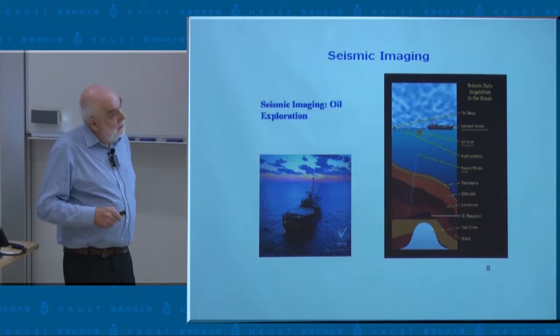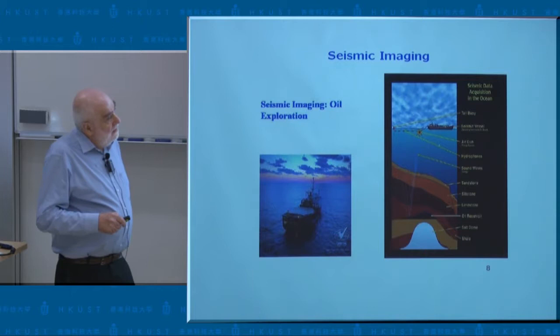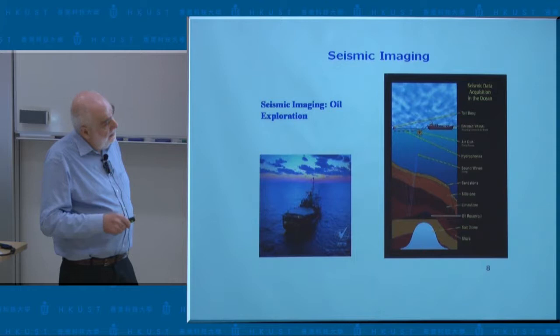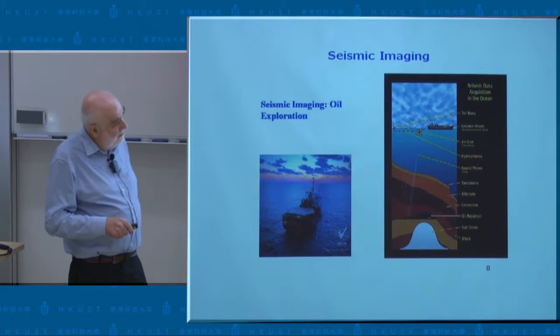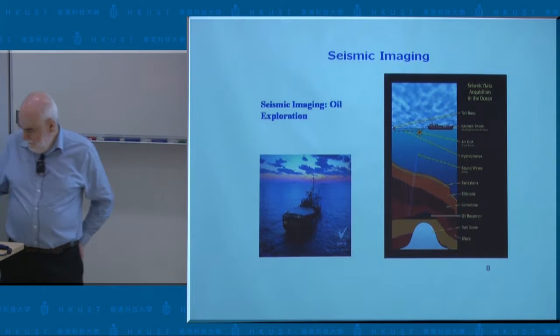Seismic imaging is a very important economic problem — you're trying to find oil in the subsurface of the Earth. Most oil exploration is done in the ocean. You have a ship with a long tail; in the tail you send sound waves from guns, and you have hydrophones that measure the response. You try to find this complicated structure in the subsurface of the sea, where the oil is. Oil is usually hidden behind salt dams that have a very low sound speed, so they are very hidden. That's why this is a difficult inverse problem — from the reflections of the waves you try to infer this structure.